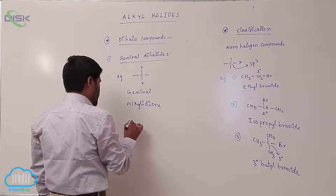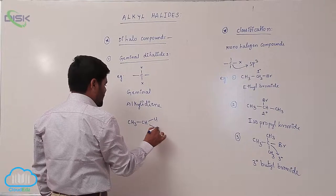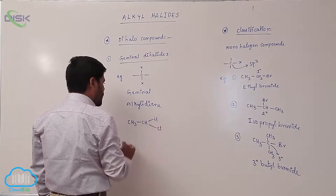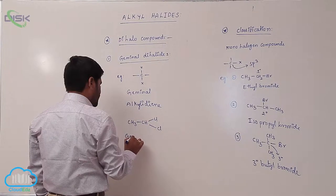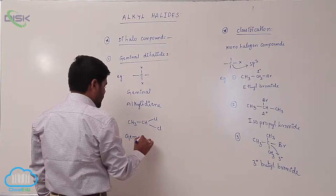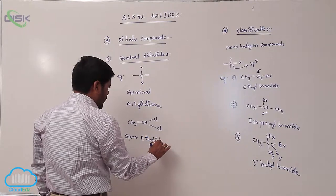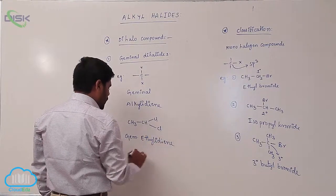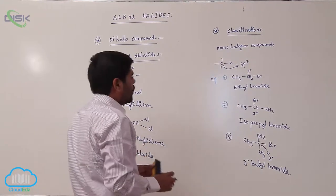Example: ethylidene dichloride. This is known as gem — ethylidene chloride. This is geminal ethylidene dichloride.